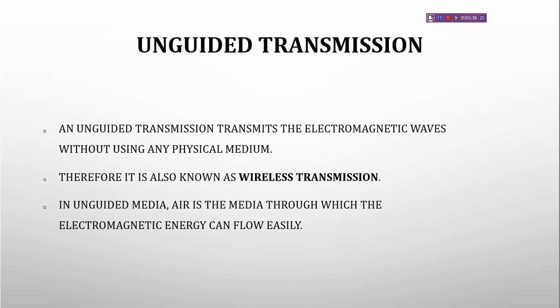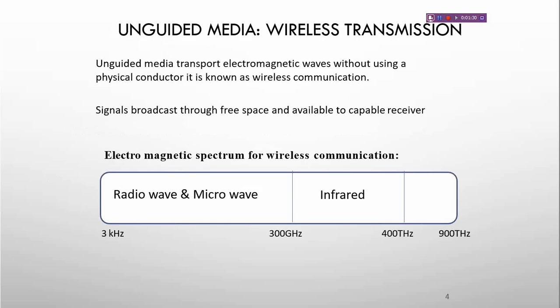It is also known as wireless transmission. In unguided media, air is the medium through which electromagnetic energy can flow easily. Unguided media supports electromagnetic waves without using a physical conductor — it is known as wireless communication. The signal broadcasts through free space and is available to any receiver.